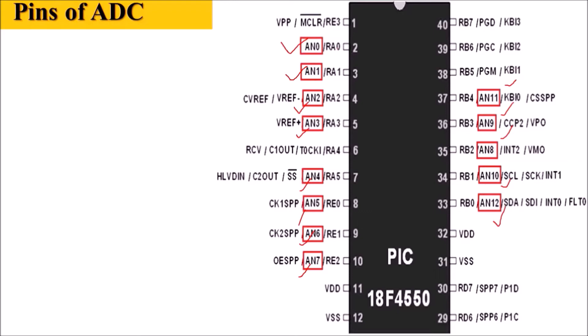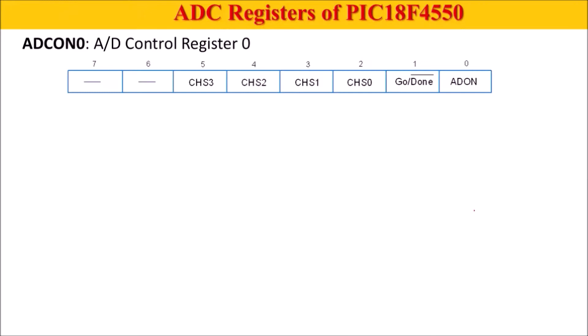Channels RA0, RA1, RA2, RA3, and RA5 are port A terminals. AN5 through AN7 are port E terminals — all three terminals of port E are used for channels 5, 6, and 7. The remaining channels are on port B.